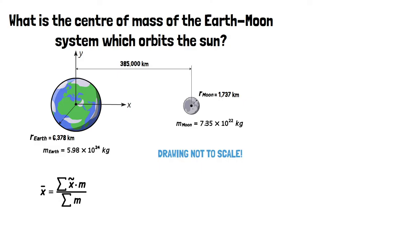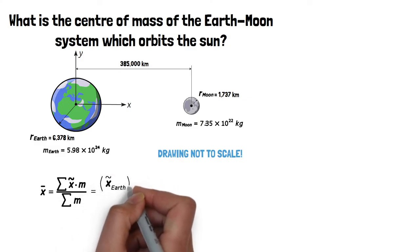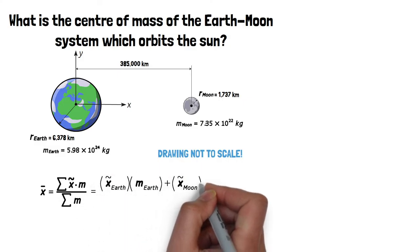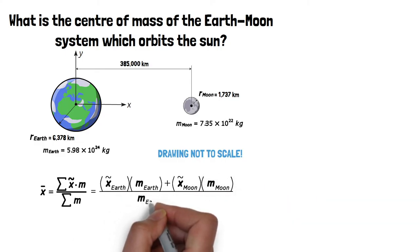Expanding this out, we get the location of the center of mass of the Earth multiplied by the mass of the Earth plus the location of the center of mass of the Moon multiplied by the mass of the Moon, all divided by the total mass of the system.